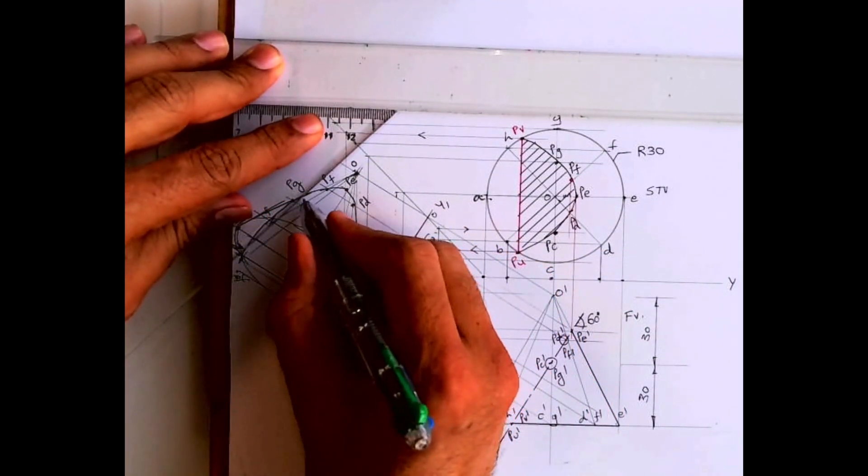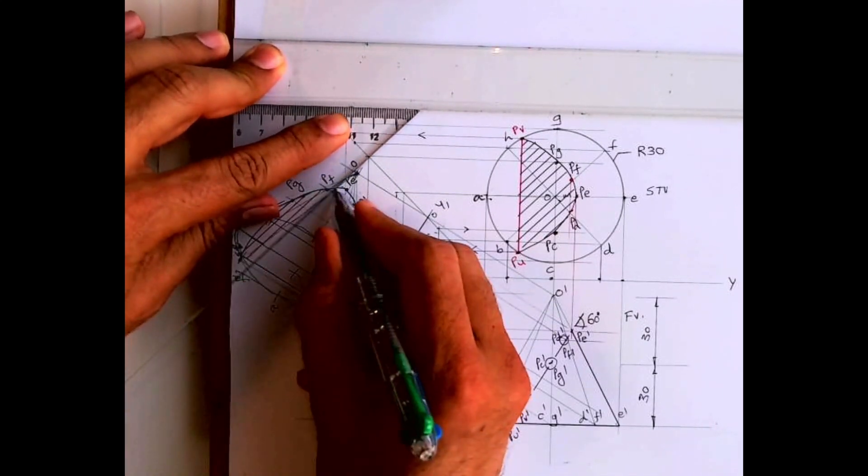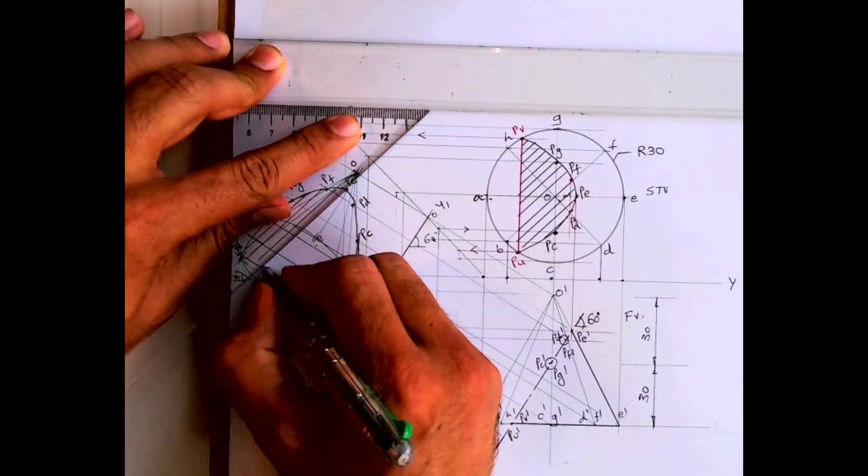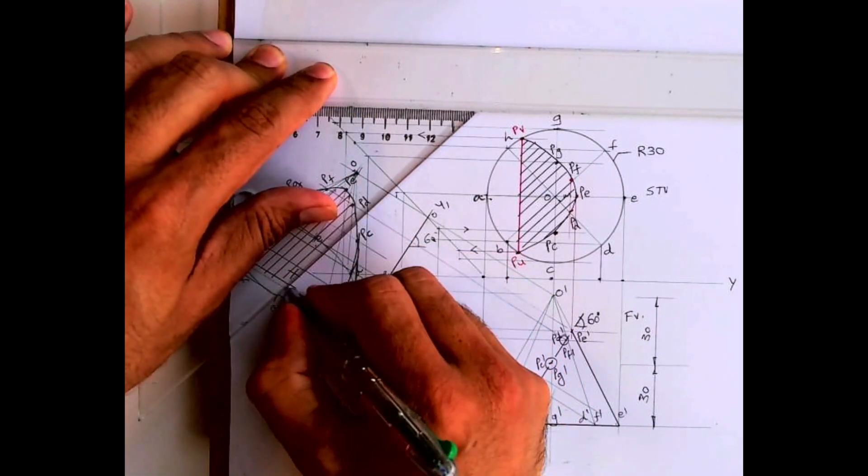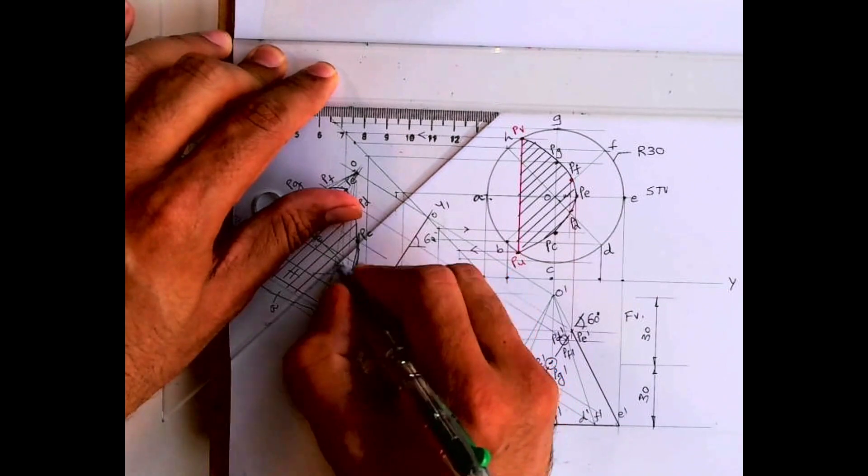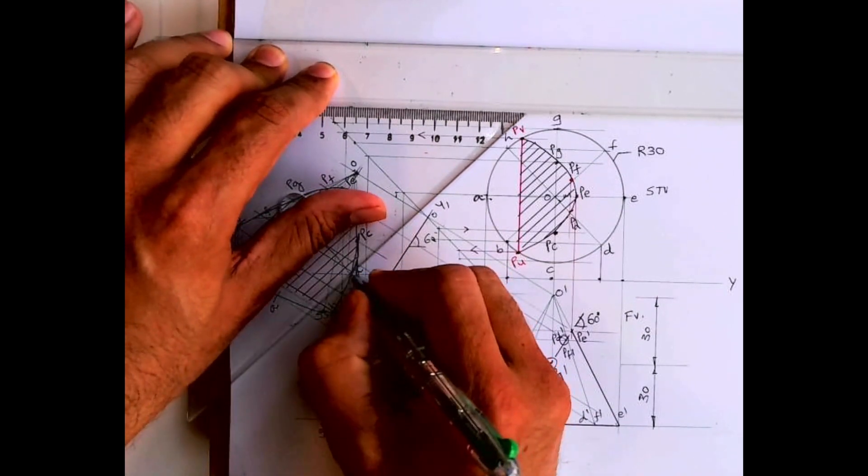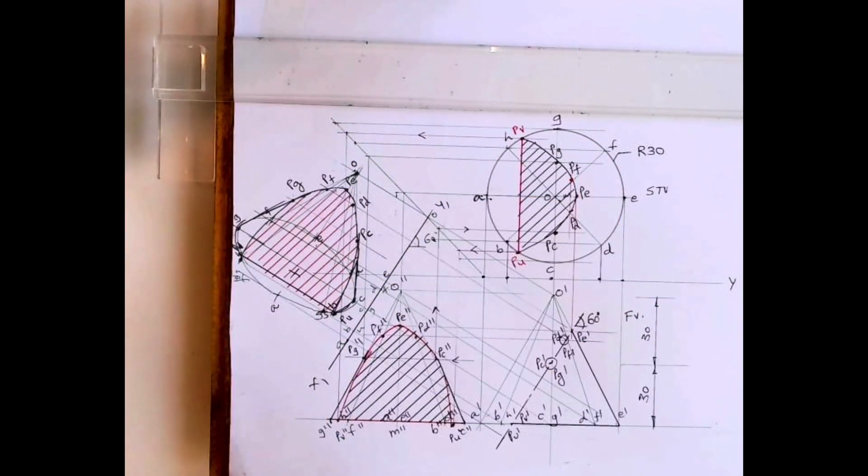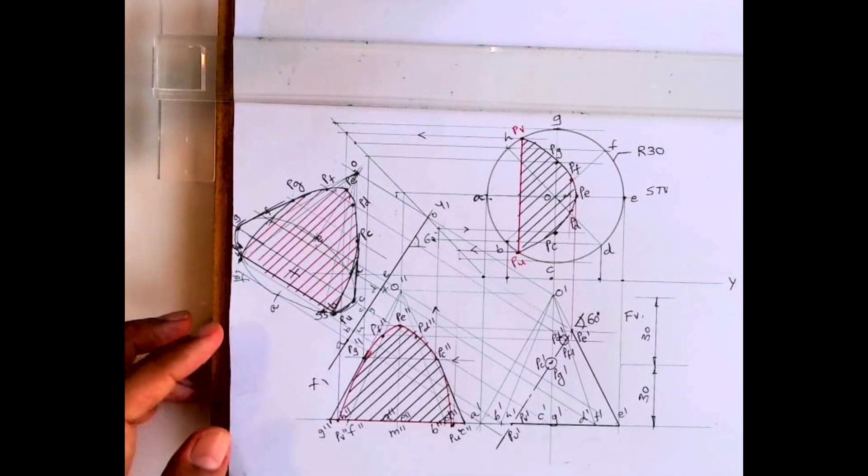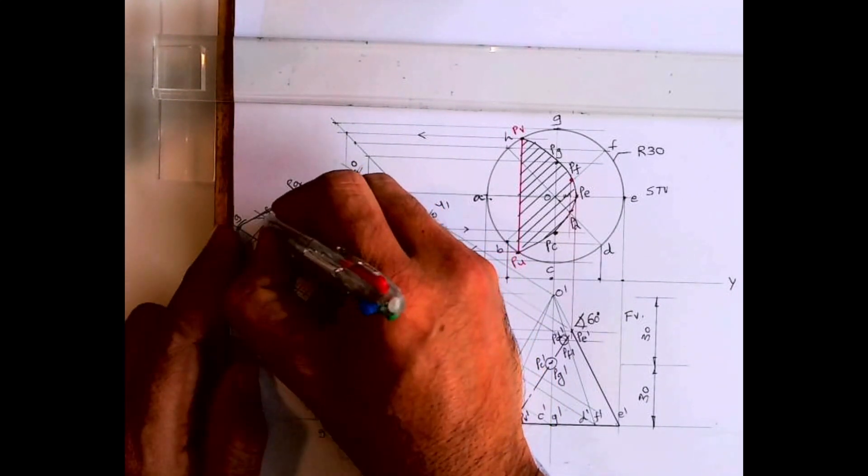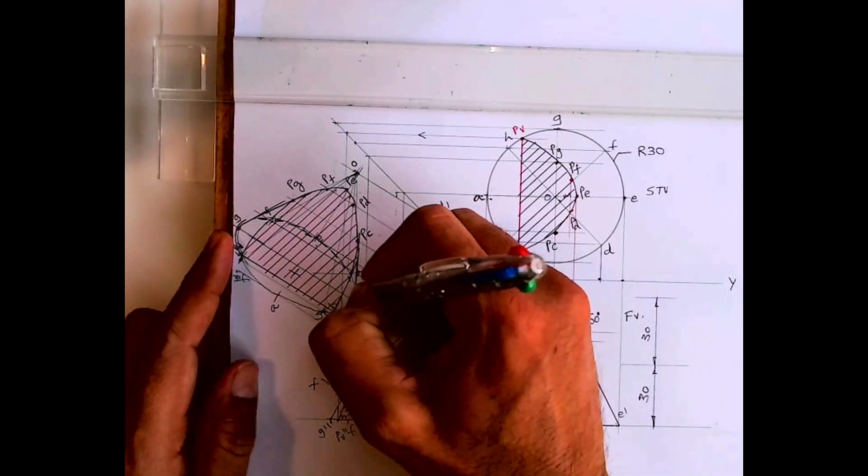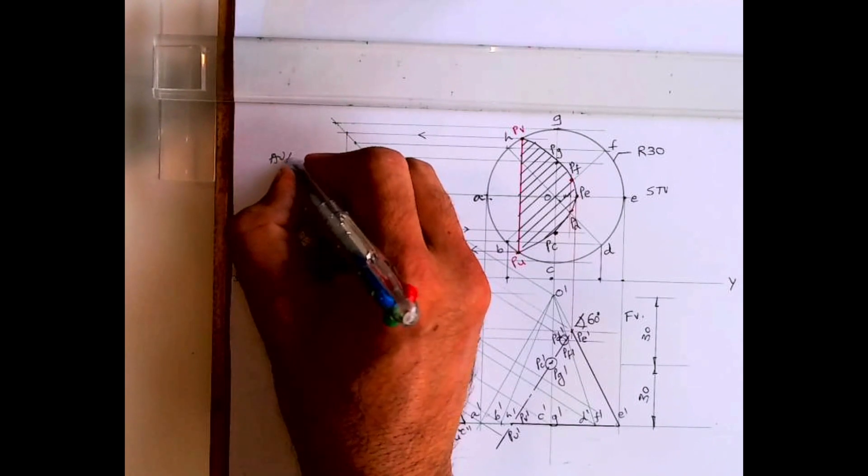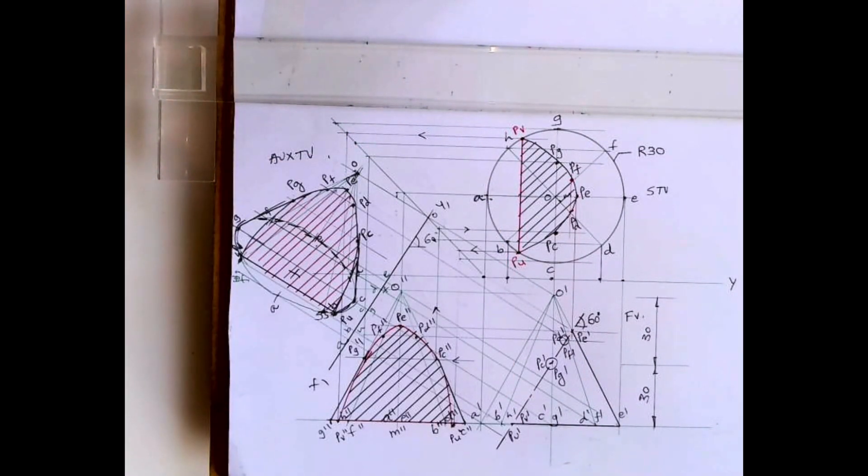So I hope you people have understood this sum. So this is, this is dotted, see the inside part. This is auxiliary view of the object. Thank you.